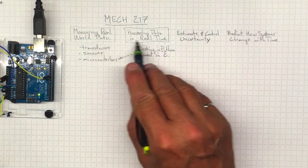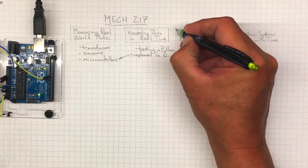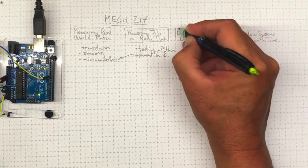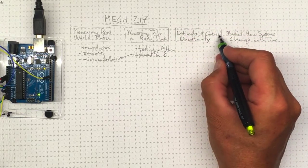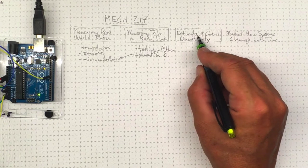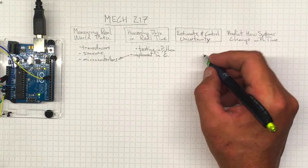None of this data is any good unless we know how accurate it is. And we're going to be trying to estimate and control uncertainty. The smaller our uncertainty is, the better. And the better our estimate of that uncertainty, the better we'll know how reliable our measurements are.